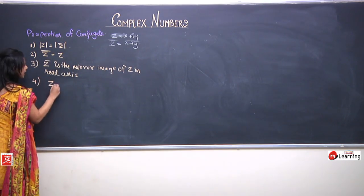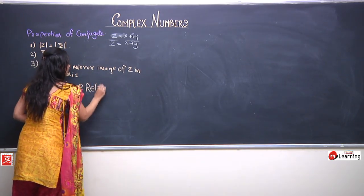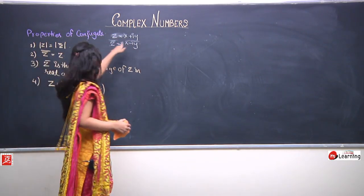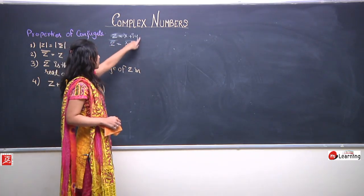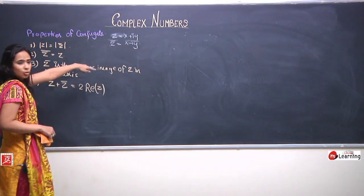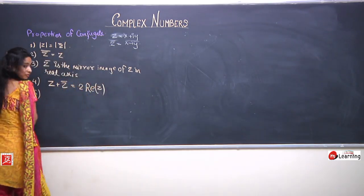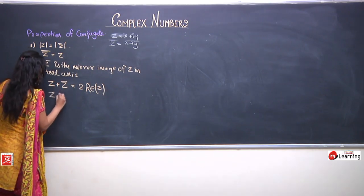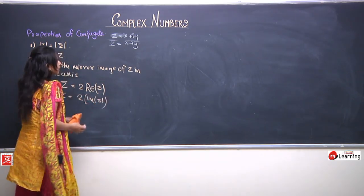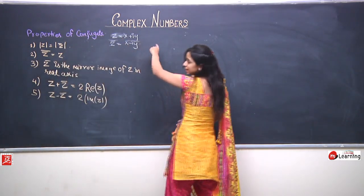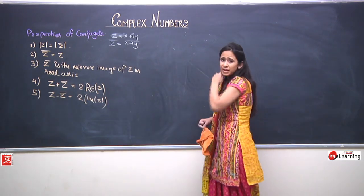The fourth property is z + z̄ = 2·Re(z). Since z = x + iy and z̄ = x − iy, adding gives 2x, which is twice the real part. The fifth property is z − z̄ = 2i·Im(z). Subtracting gives z − z̄ = (x + iy) − (x − iy) = 2iy, which is twice the imaginary part.